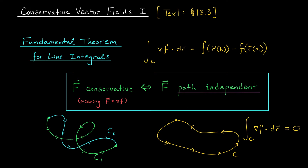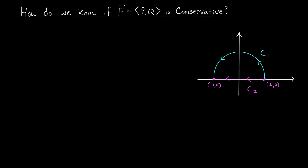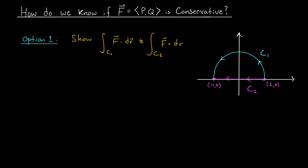So there are some really cute results about conservative vector fields from the Fundamental Theorem. But if I just hand you a vector field, how do you know if these results apply? How do you know if that vector field is conservative? At this point, we don't have a nice, simple test, so in this video we're going to design one. We actually did something like this at the end of the last video — we showed a vector field was not conservative by finding two paths, C1 and C2, that started and ended at the same points but gave different line integral values. This isn't a very efficient method, so we're going to follow a different approach based on a very simple observation.